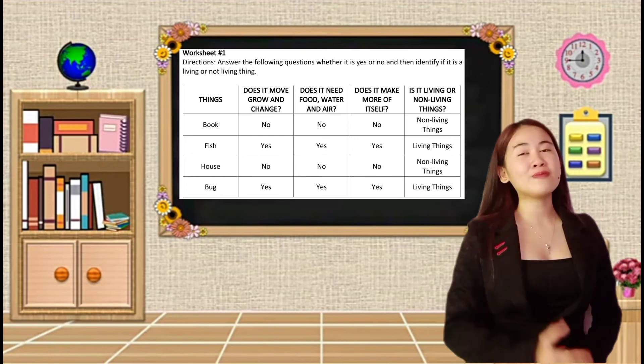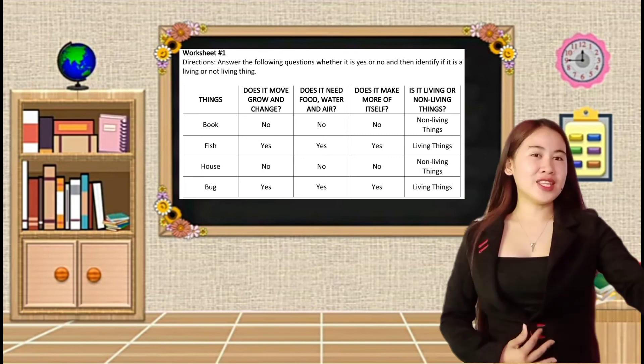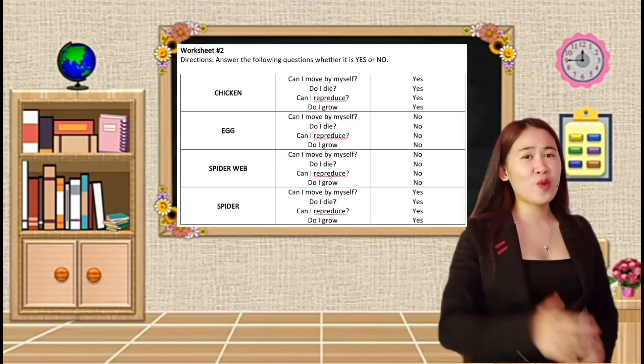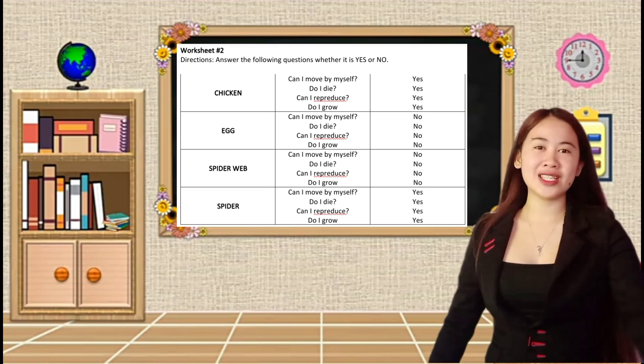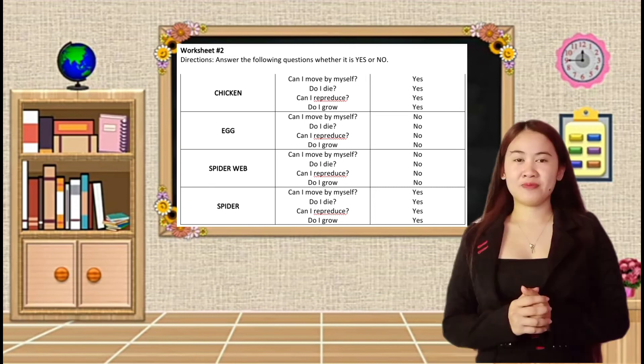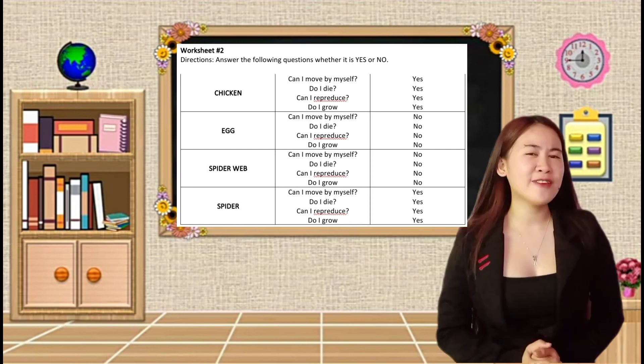So, for the worksheet number one, please go to the board and answer Klein, Jem, Analu, and Laika. For the worksheet number two, please go to the board, Albert, Chari, Tanette, and Sheila. So, who among you here got the perfect score? So, all of you got the perfect score. Now, let's give yourself a round of applause.